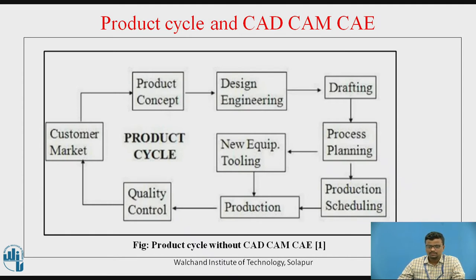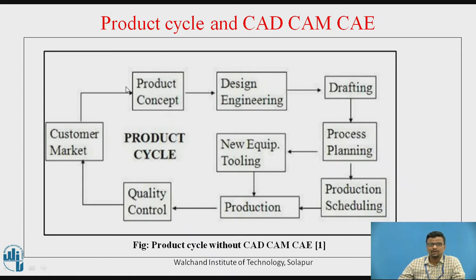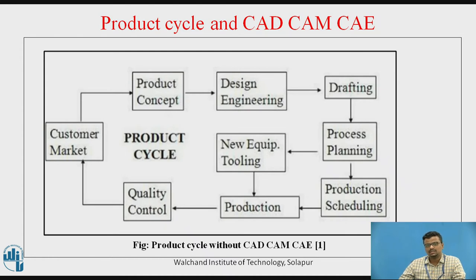How will my product look? What will be my design process? What are the different dimensions to provide in the design? What are the different components to keep in the process planning sheet? What is the material to use during manufacturing operations? These parameters will all be part of the product concept. After finalizing the product concept, it will go to design engineering. The design engineering consists of a 3D model and engineering analysis, both created with the help of manual work.